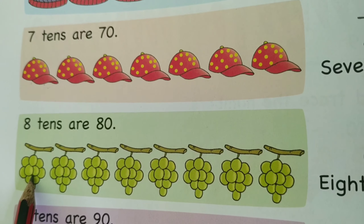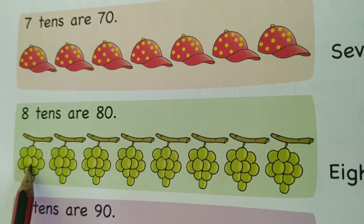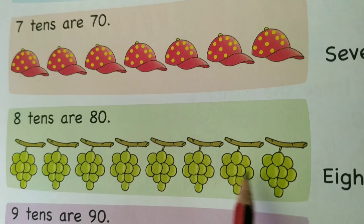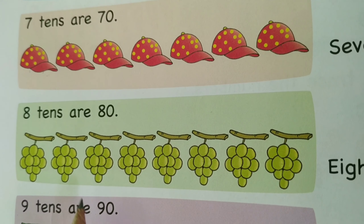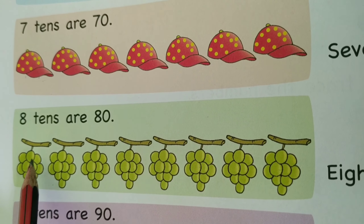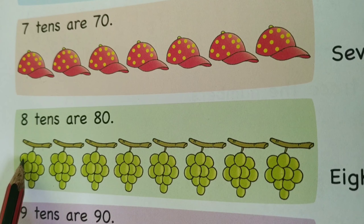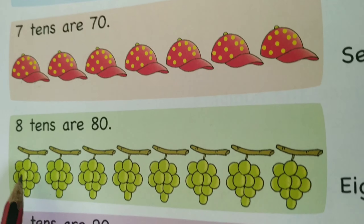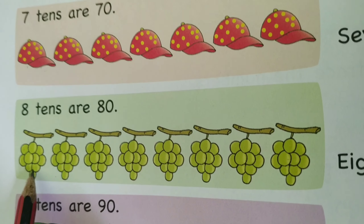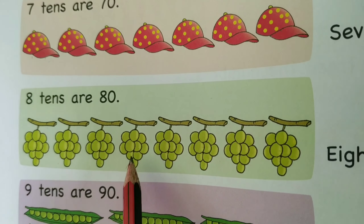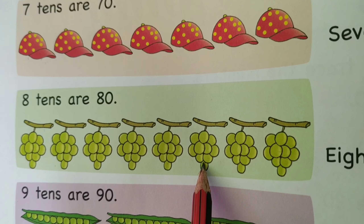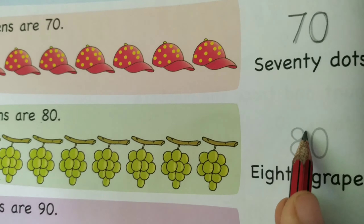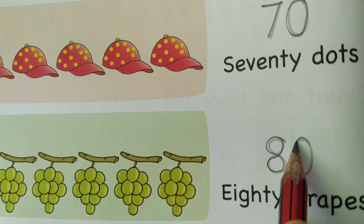Next, let's see grapes. Let's count: one, two, three, four, five, six, seven, eight — eight bunches of grapes. In each bunch there are ten. One ten, two ten, three ten, four ten, five ten, six ten, seven ten, eight ten — eight tens are eighty. Trace over the number: eighty.